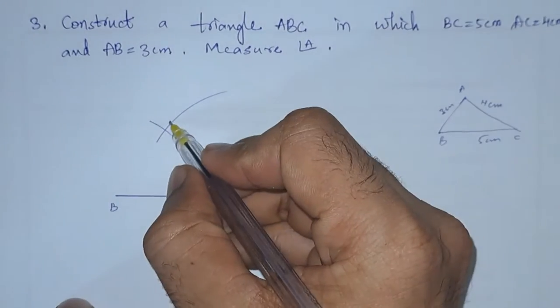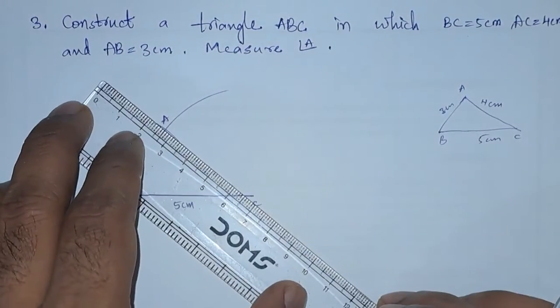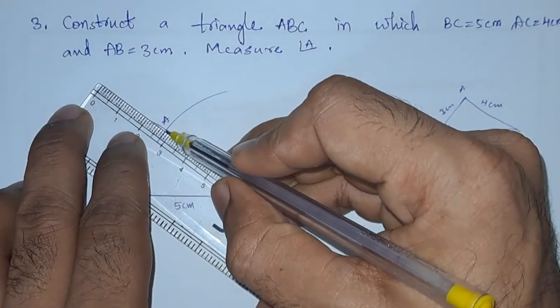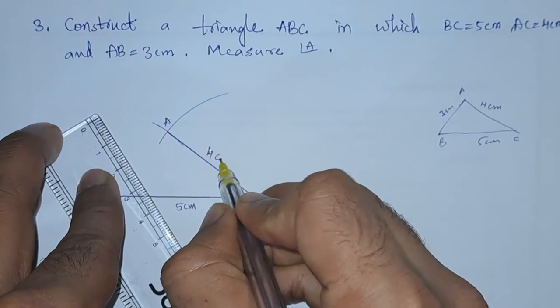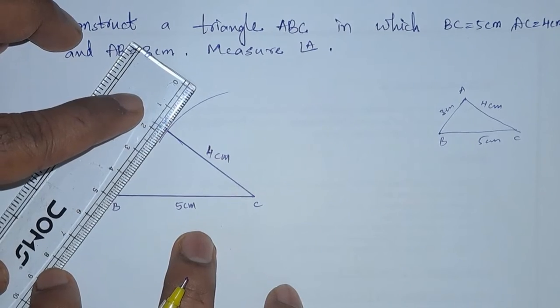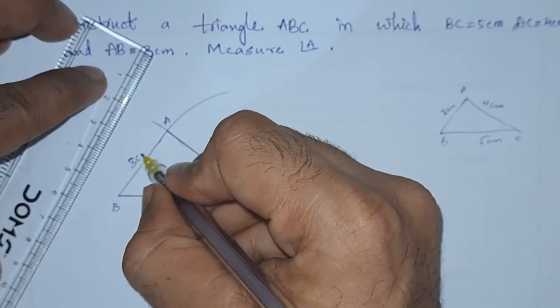Now, the point where these two arcs meet, let this be A. We will join AC, so we will get this line AC as 4 centimeters, and now we will join A to B. A to B we will get 3 centimeters.